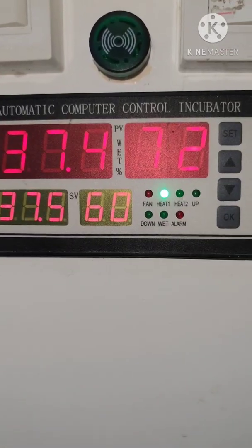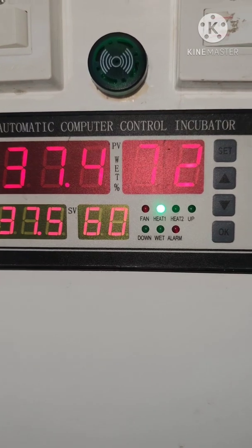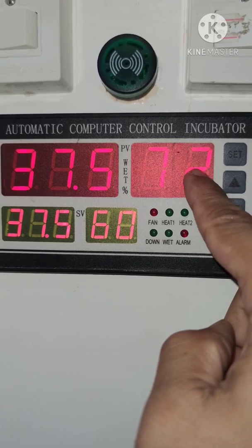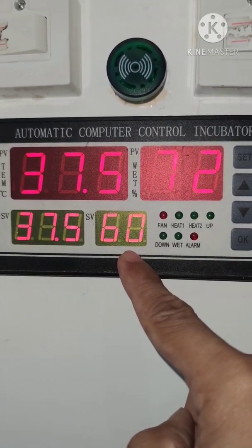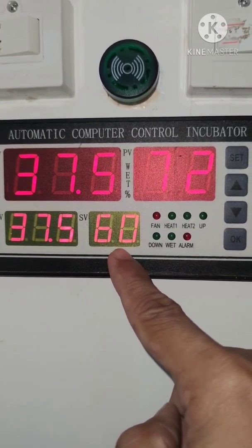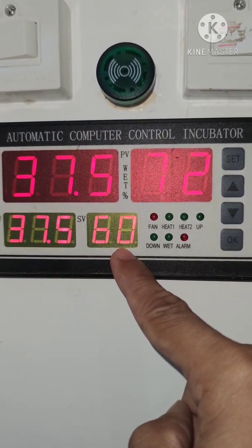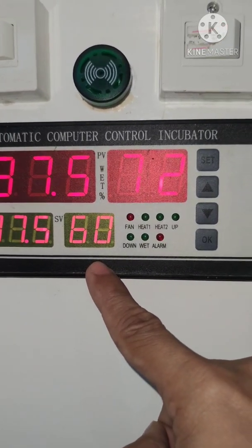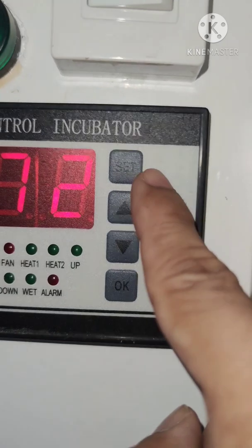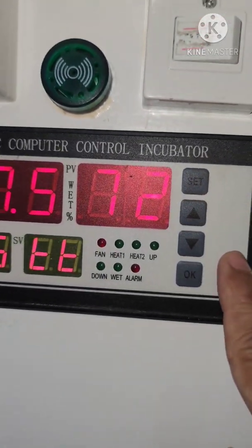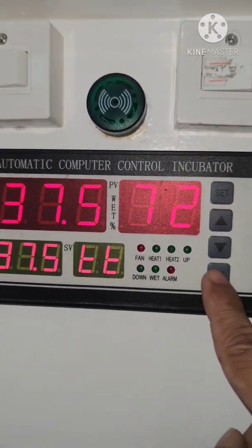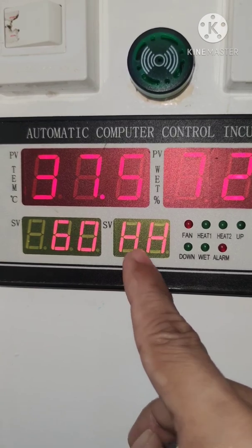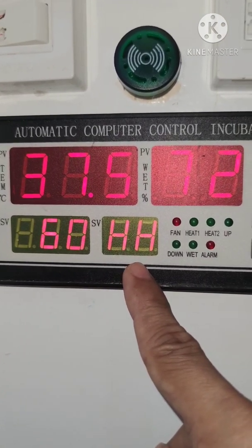Now you're going to change the numerical value for our humidity. So this is our actual humidity value. And then this is the desired, your desired number for your humidity. Now if you want to change this value, if you want to increase it or if you want to decrease it, you need to press set. The set button. And then you need to press okay. So you are now on your humidity display.